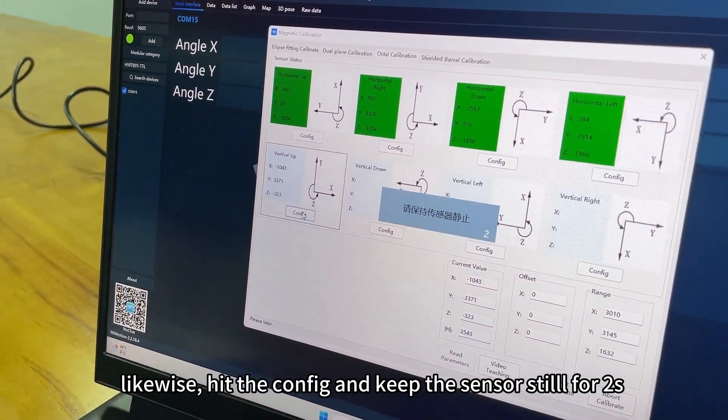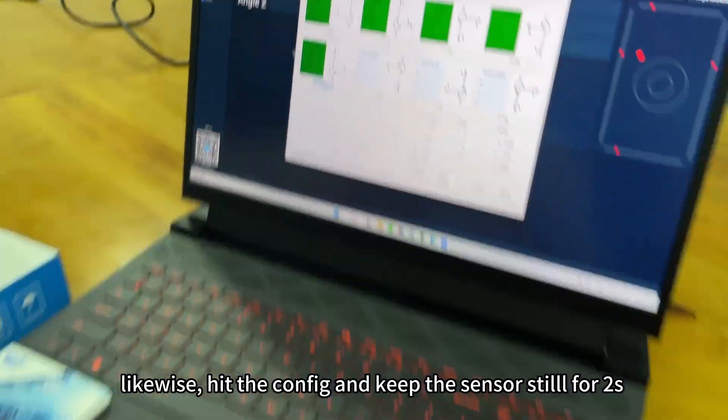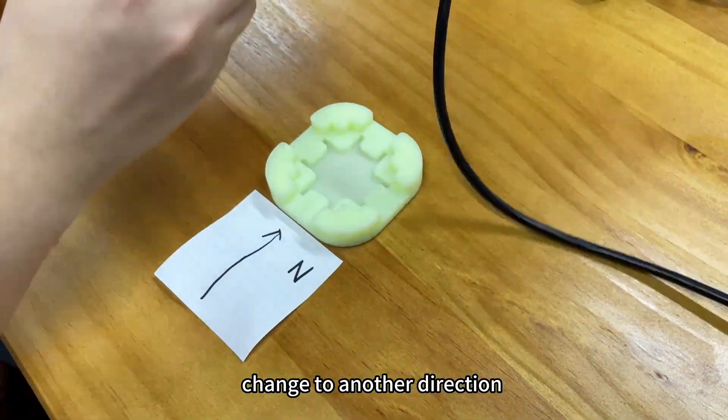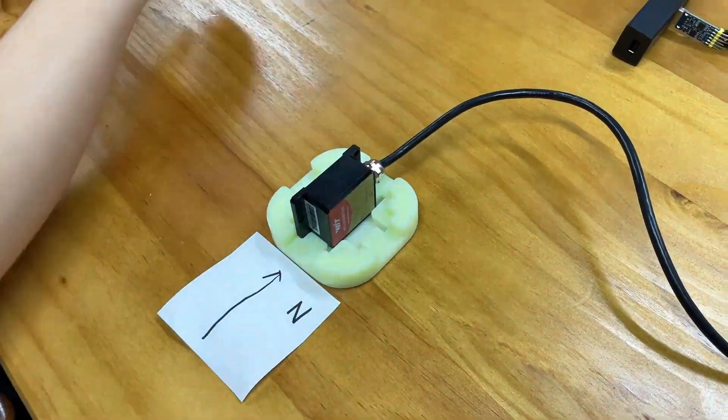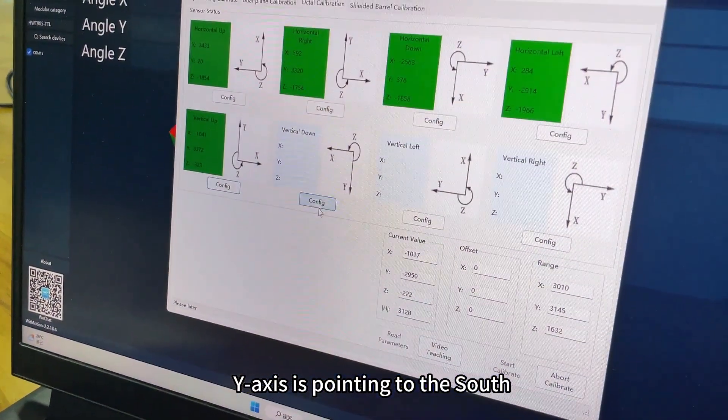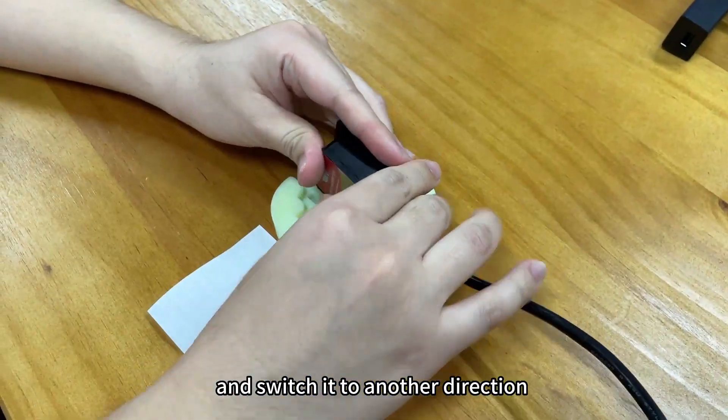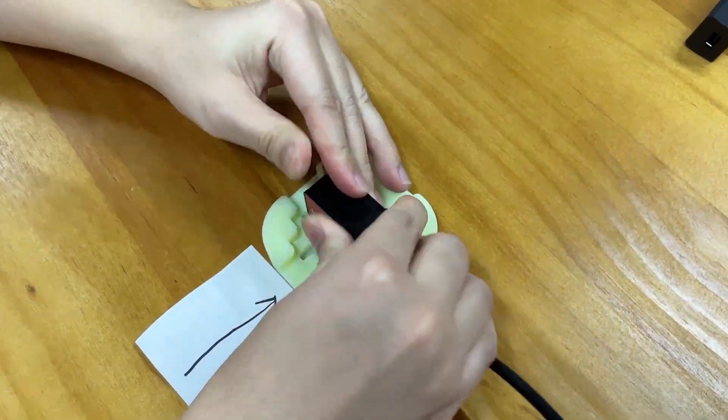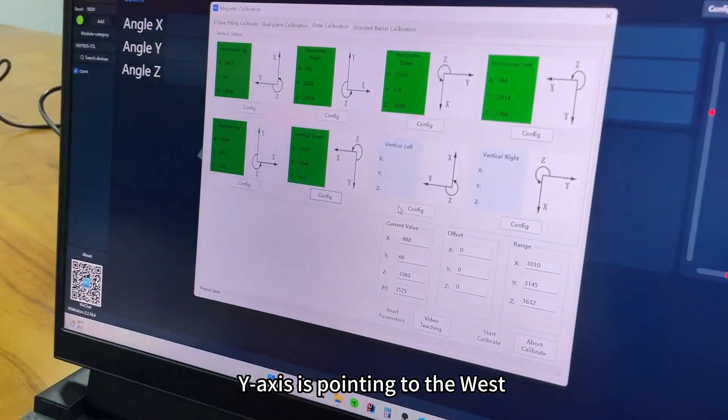Likewise, hit the config and keep the sensor still for two seconds. Let's change to another direction with the Y axis pointing to the south, then switch to another direction with the Y axis pointing to the west.